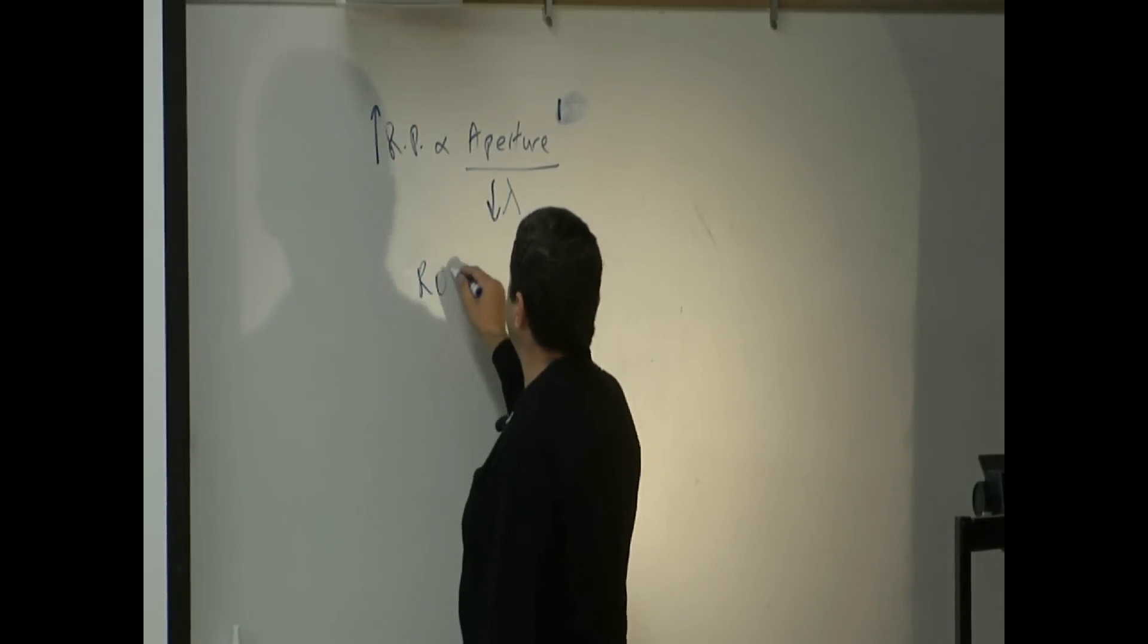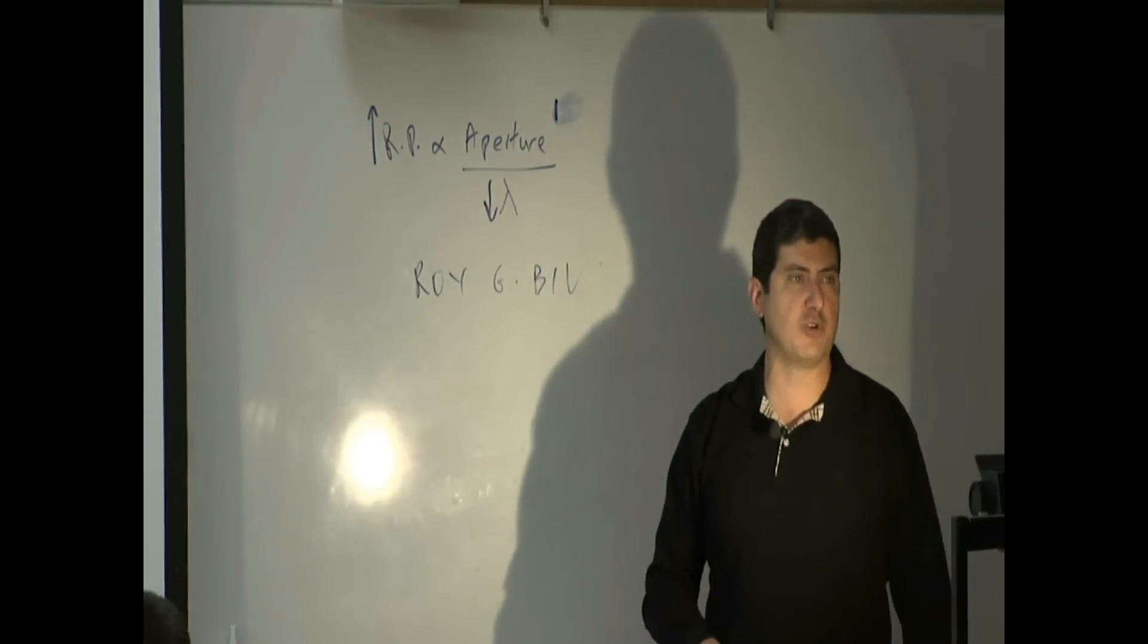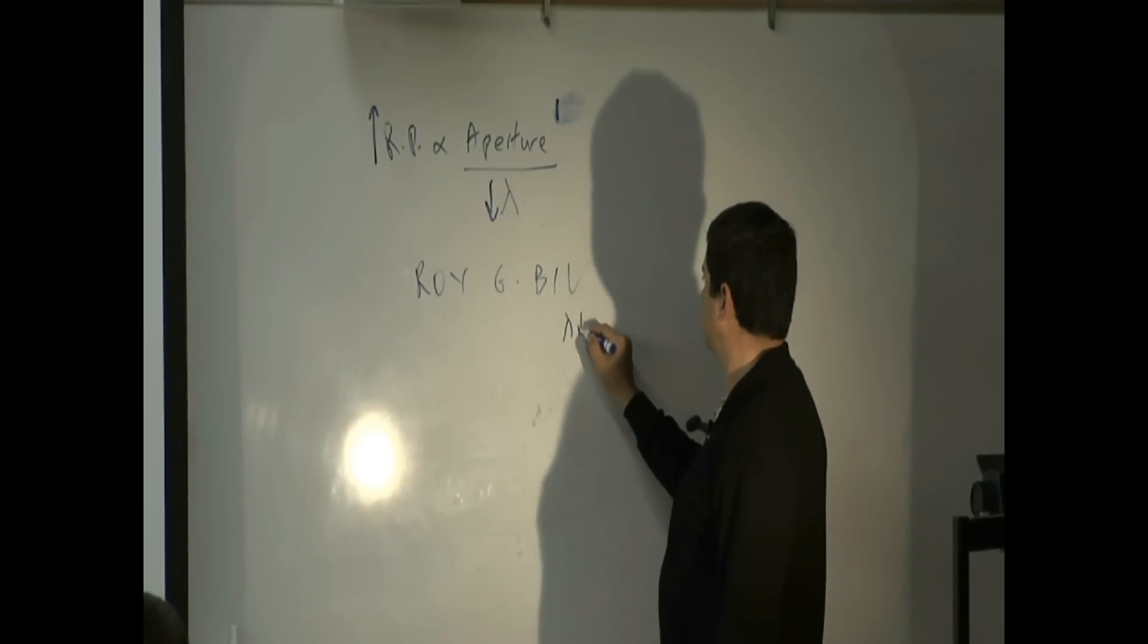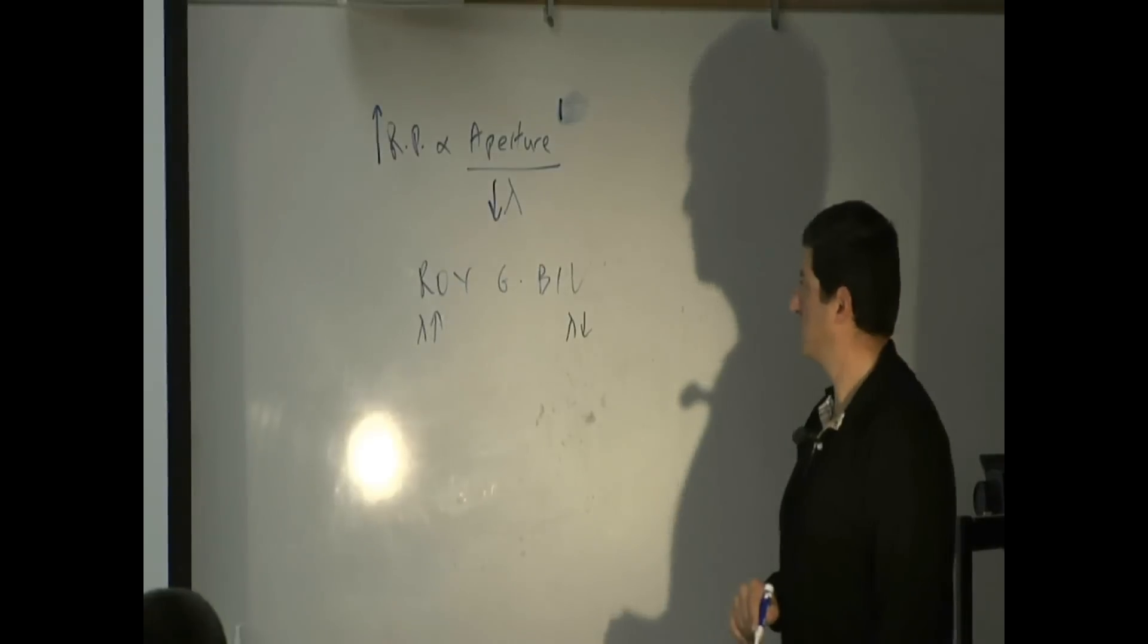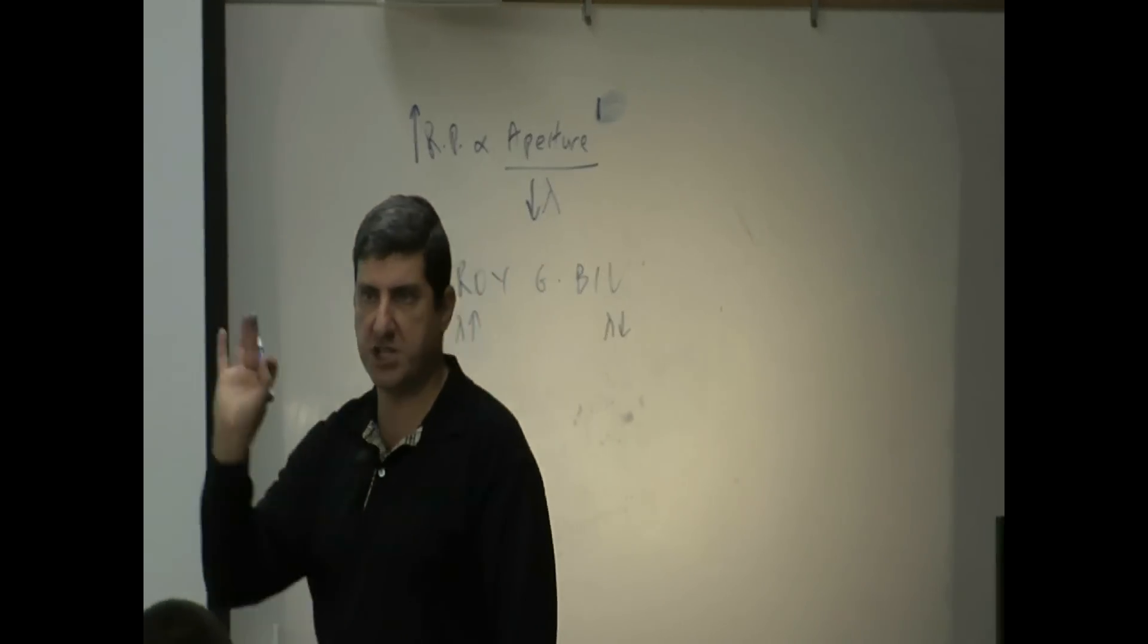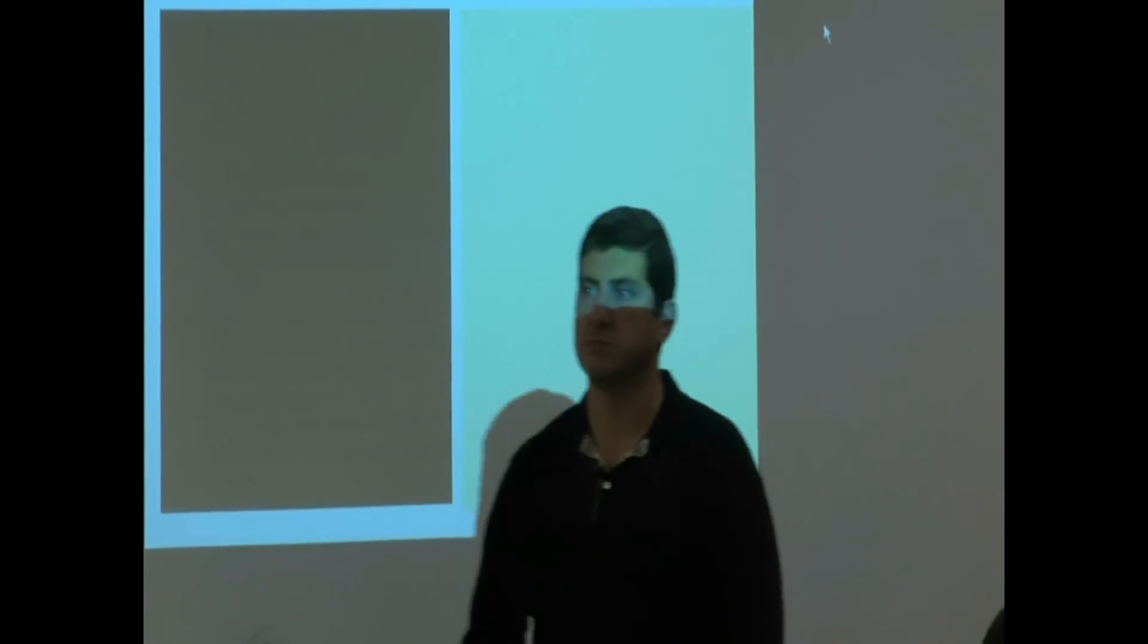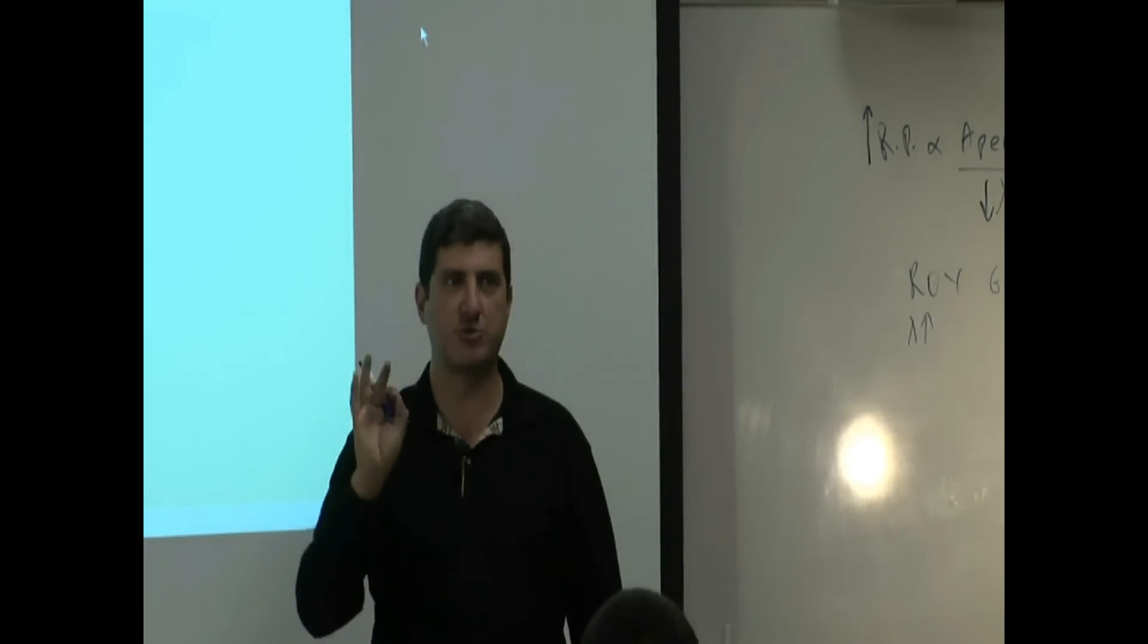Okay, between the visible spectrum, which one has the smallest wavelength? Violet, red, right? Red has the largest. So which one can you see better? A violet picture? Can you see it better? Or a red picture? Violet, right? Smaller wavelength? You can see a resolution better.